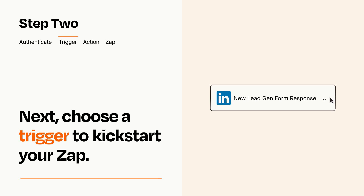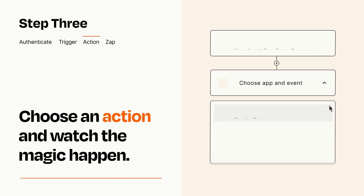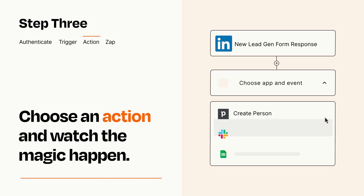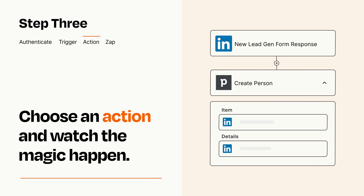This last part is where the magic happens. Choose the action you want to happen in your target app. You'll see a bunch of fields where you can specify the details of your Zap. You can type free form text or pull data in from your trigger step as needed.